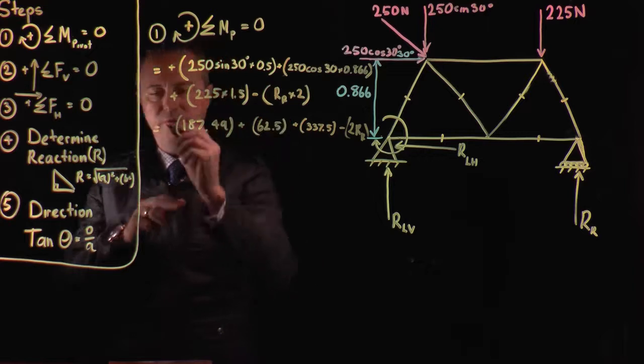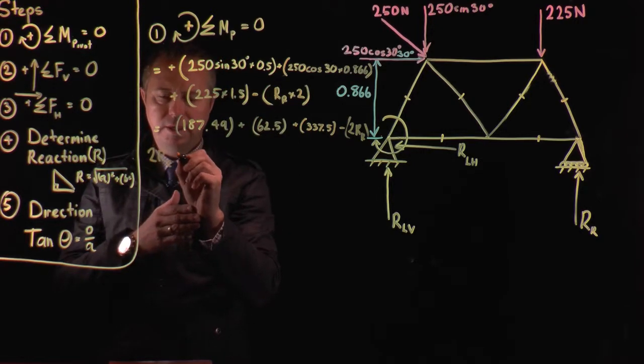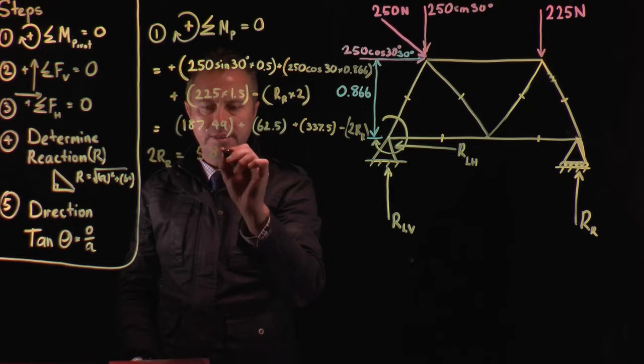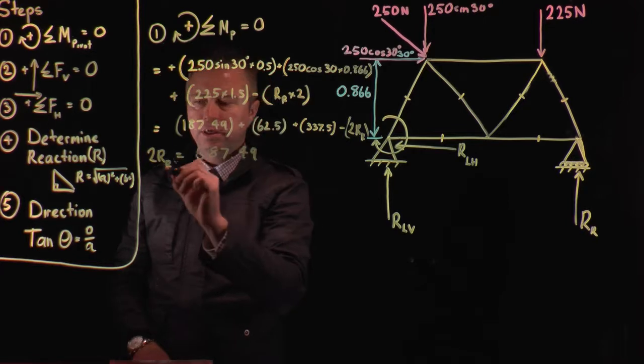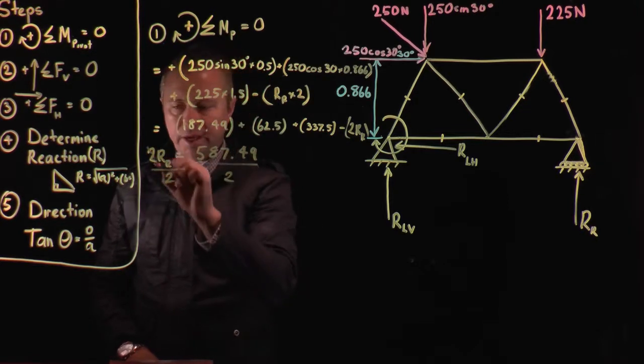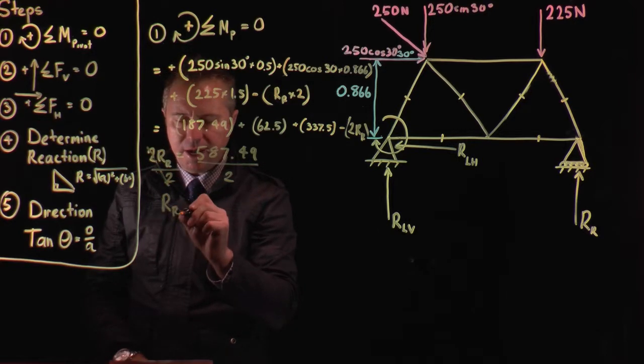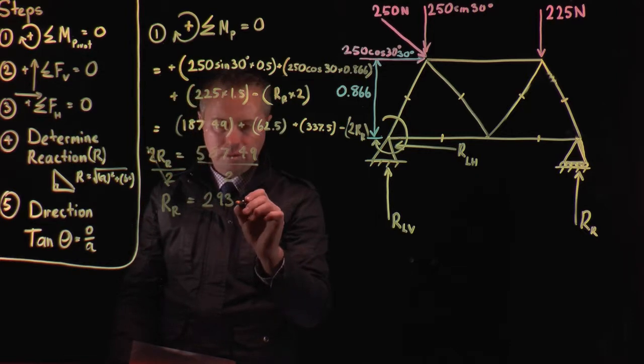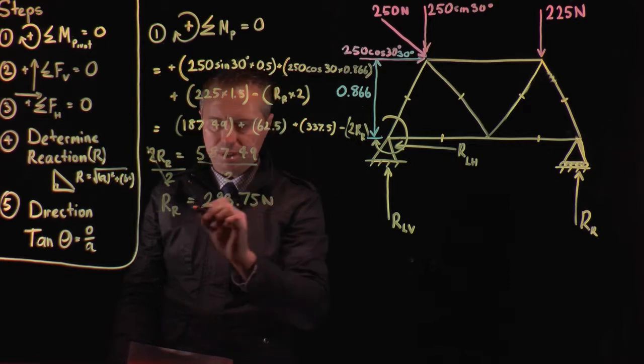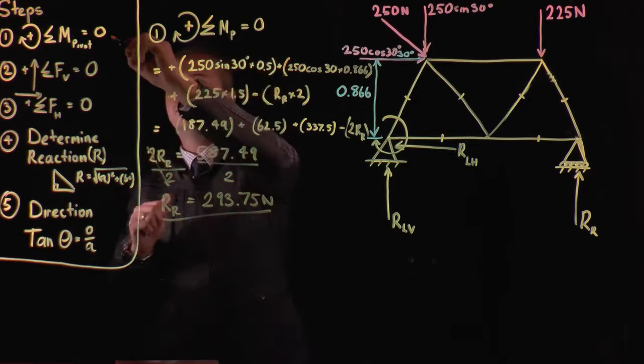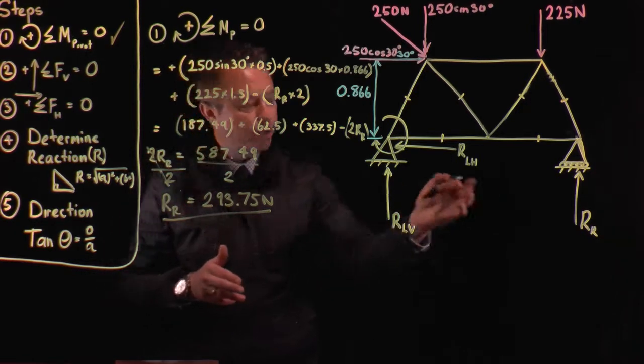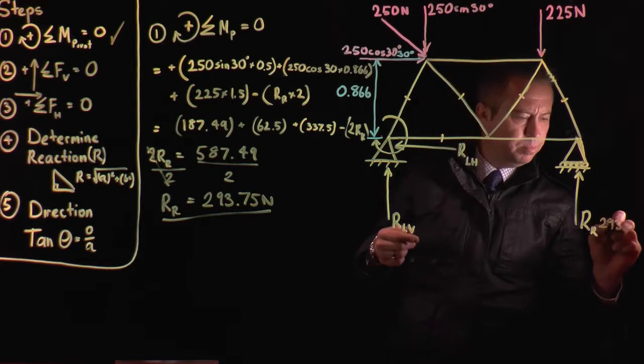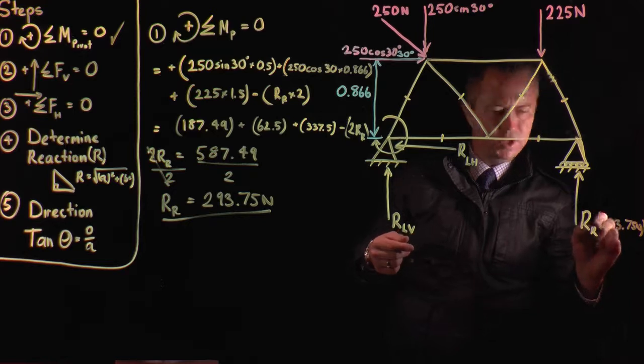And then from here, we can bring the minus over here. So that will give us 2RR equals. Then we put these numbers together and we'll end up getting 587.49. We divide by 2. That cancels out. And reaction R will equal 293.75 Newtons. So we've done step one. And that reaction R, we can come back over to the diagram and just plot that in there. So that's 293.75 Newtons.